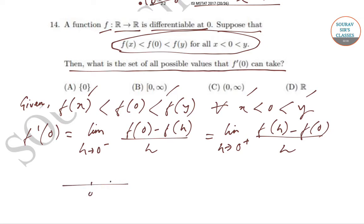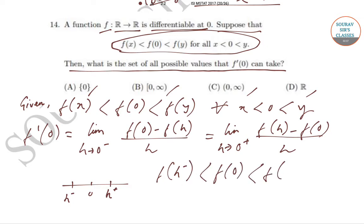If 0 is our point, then h⁺ will be somewhere to the right and h⁻ will be somewhere to the left. So f(h⁻) < f(0) and f(0) < f(h⁺).